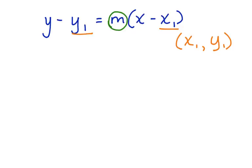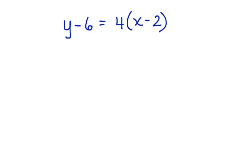Now let's look at an example that's in point-slope form. y minus 6 equals 4 times the quantity x minus 2. Now in this example, 4 represents the slope. 2 and 6 represent the values from an ordered pair.